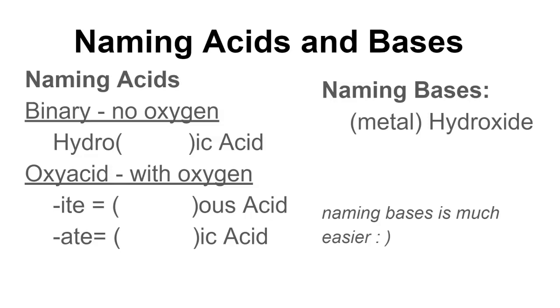Naming bases is going to be a lot easier. You just have the metal, and then it's hydroxide, so NaOH would be sodium hydroxide. I would definitely recommend having this in your notebook, so that when you see an acid or a base, you can use these rules to immediately name it.